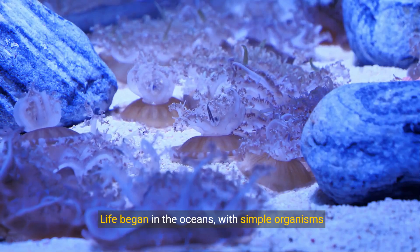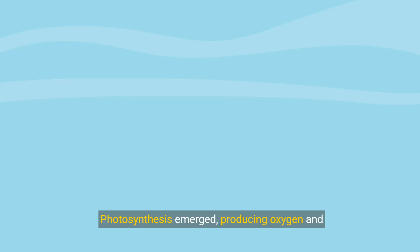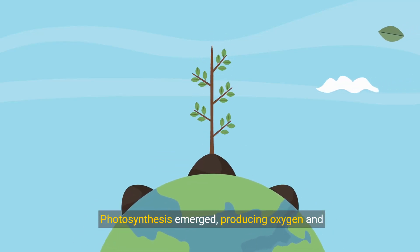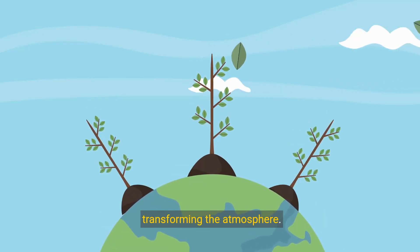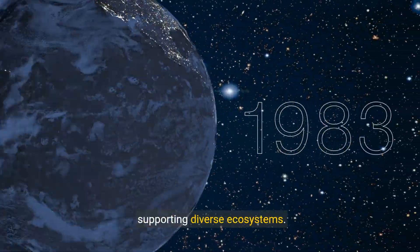Life began in the oceans with simple organisms evolving over billions of years. Photosynthesis emerged, producing oxygen and transforming the atmosphere. Earth's unique tilt and orbit creates seasons, supporting diverse ecosystems.